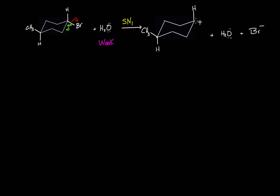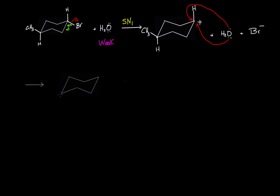The carbocation is an sp2 hybridized carbon, so the geometry is trigonal planar. This means that water can attack from above the plane or from below the plane, and therefore in this case we will have a mixture of products.